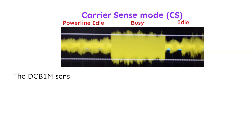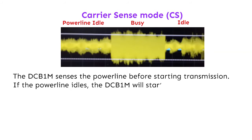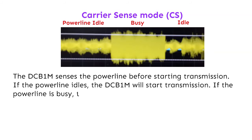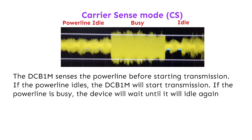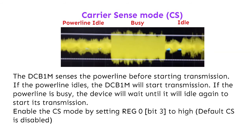Carrier sense mode: the DCB1M senses the powerline before starting transmission. If the powerline is idle, the DCB1M will start transmission. If the powerline is busy, the device will wait until it idles again before starting its transmission. Enable CS mode by setting Reg 0 bit 3 to high. By default, CS is disabled.